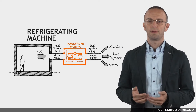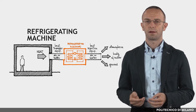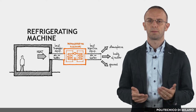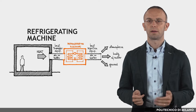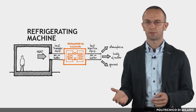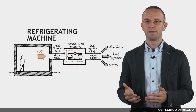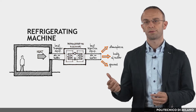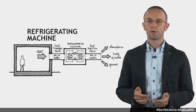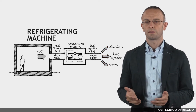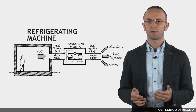The refrigeration machine is the basis of the ordinary domestic refrigerator, extracting heat from an insulated box at a low temperature and exchanging it with the surrounding environment at a higher temperature. The same process can be used to extract heat from a room and release it into external air, the ground, or a river. In the heat pump mode, the process is simply inverted and heat is extracted from the surrounding environment and transmitted to the building.